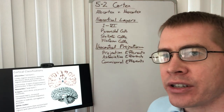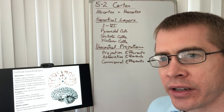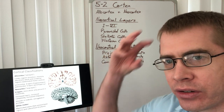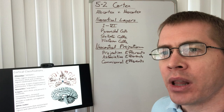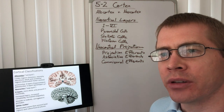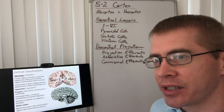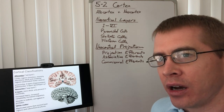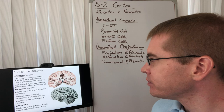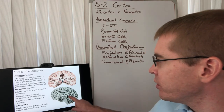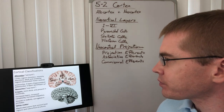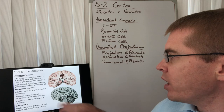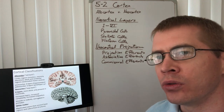The cortex can be classified into different regions: we have an allocortex and a neocortex. The allocortex means 'old cortex' — cortex means 'bark' because the different bumps look like bark on a tree. The allocortex, outlined here in black, is mostly composed of structures of the diencephalon we talked about last time: the thalamus, the striatum, the caudate, the putamen, the hippocampus, the epithalamus, the hypothalamus, the cingulate cortex, the insular cortex, and the parahippocampal gyrus. These are all examples of older cortical structures.